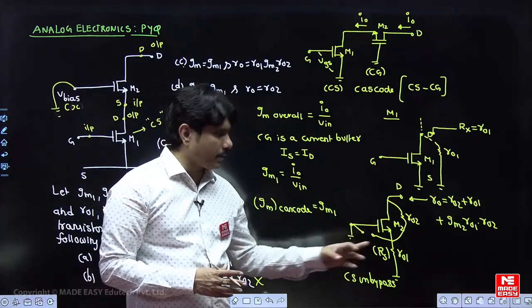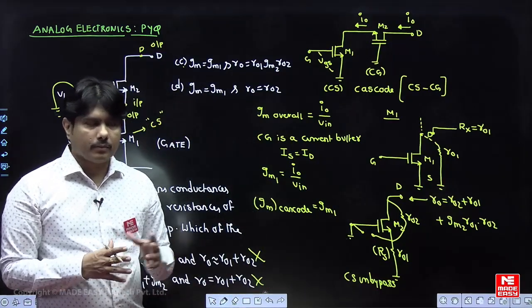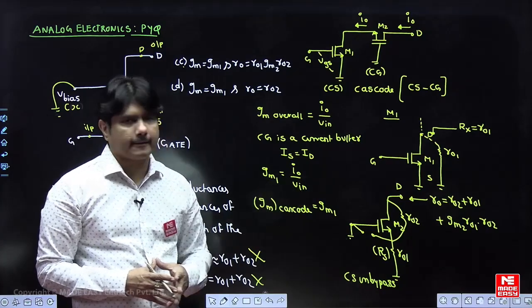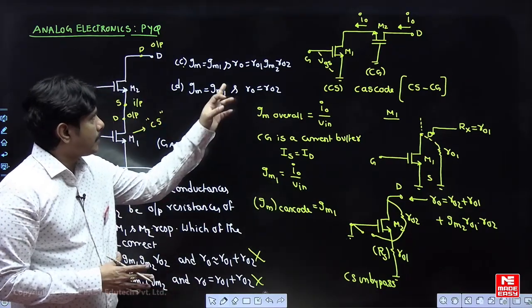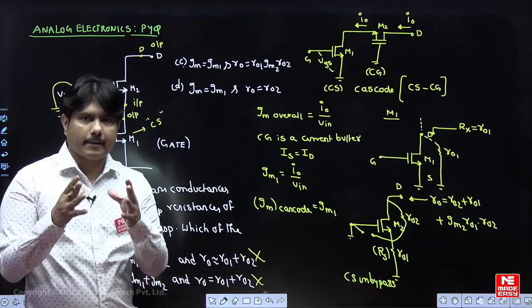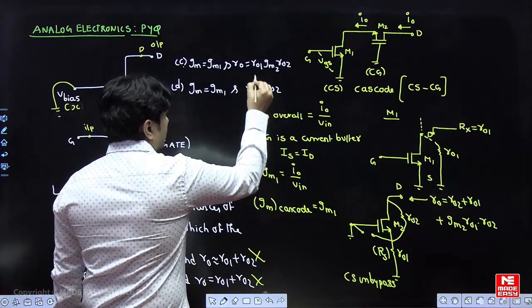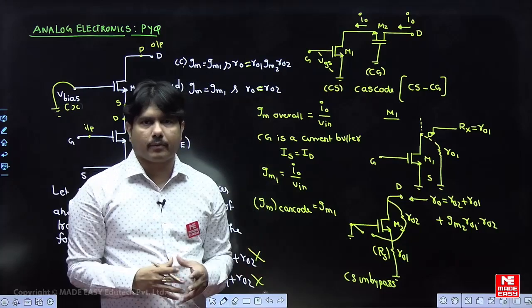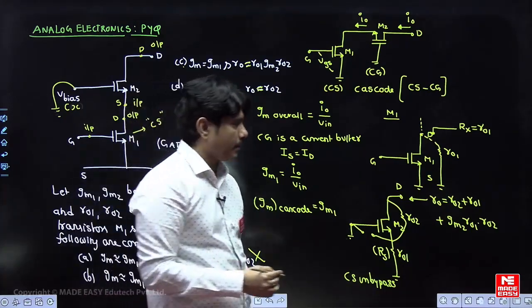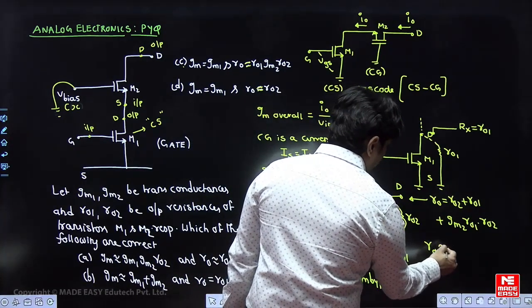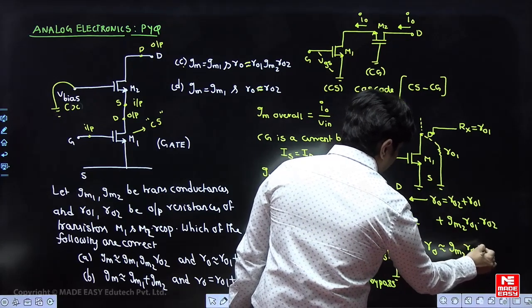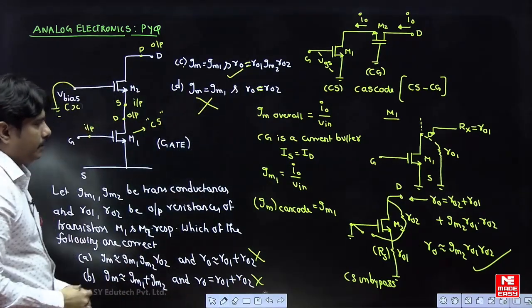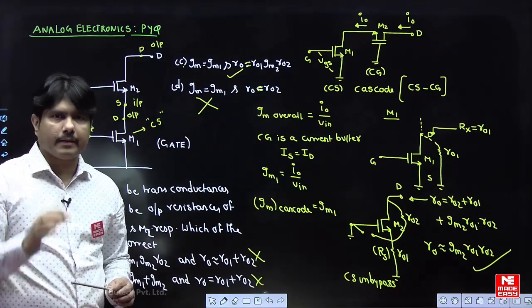So R0 equals R02 plus R01 plus GM2·R01·R02. In the exam, approximate answers are given. The term GM2·R01·R02 is a very large quantity compared to R01 or R02 separately. So R0 is approximately equal to GM2·R01·R02. Therefore, the option with only R02 is wrong, and the option with GM2·R01·R02 is correct. This is the method to solve this type of interesting circuit question.